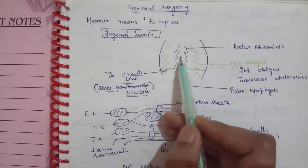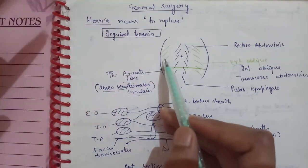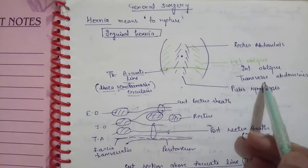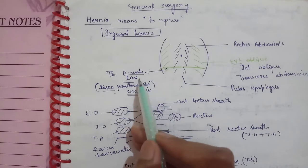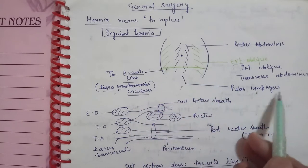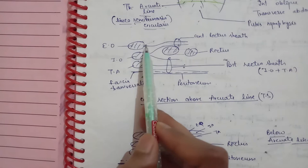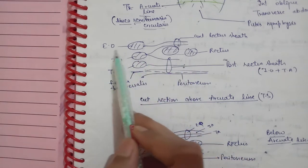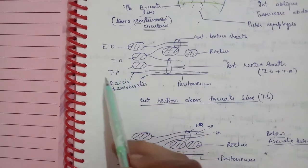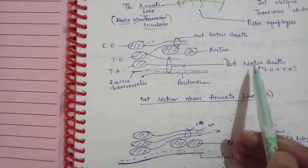First we have inguinal hernia. This is the diagram of the anterior abdominal wall. Here is the umbilicus and the rectus abdominis muscle. Laterally is the external oblique, then the internal oblique, and the transversus abdominis. These are the muscles of the anterior abdominal wall. In the mid is the rectus abdominis, and we have the external oblique and transversus abdominis. Then we have the anterior rectus sheath and posterior rectus sheath.